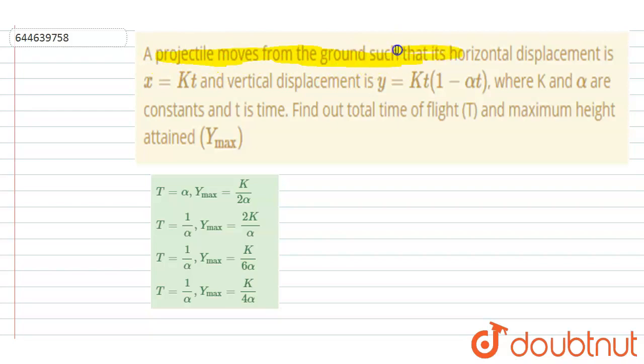from the ground such that its horizontal displacement is x = kt and vertical displacement y = kt(1 - αt), where k and α are constants and t is time.